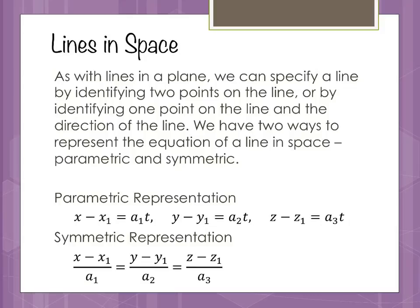The parametric representation has three separate equations — one with respect to x, one with respect to y, and one with respect to z. The symmetric representation you can get straight from the parametric representation by simply solving each of those for t and setting them all equal to each other.